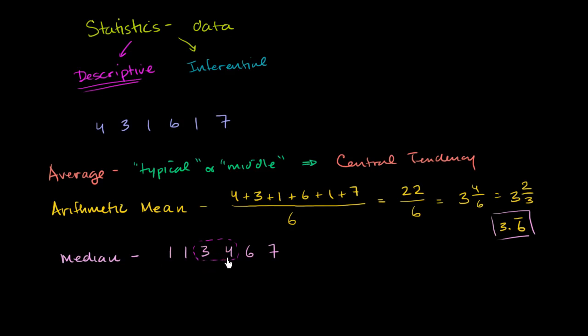you actually go halfway between these 2 numbers. Essentially, you're taking the arithmetic mean of these 2 numbers to find the median. So the median is going to be halfway in between 3 and 4, which is going to be 3.5. So the median in this case is 3.5.